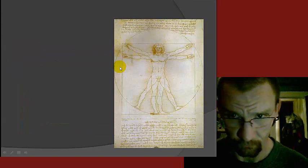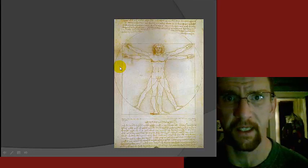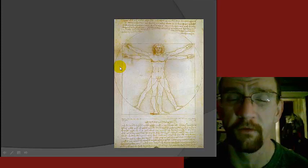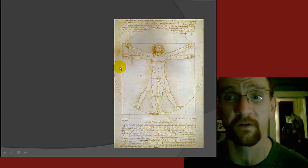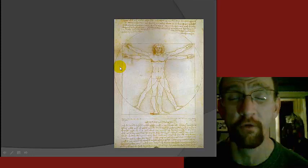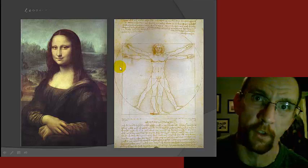This is a painting called the Vitruvian Man. In his attempt to realistically portray human form, Leonardo da Vinci was a scientist. He would study human form and would even go so far as to study cadavers — dead bodies. The Vitruvian Man was found in one of his sketchbooks.